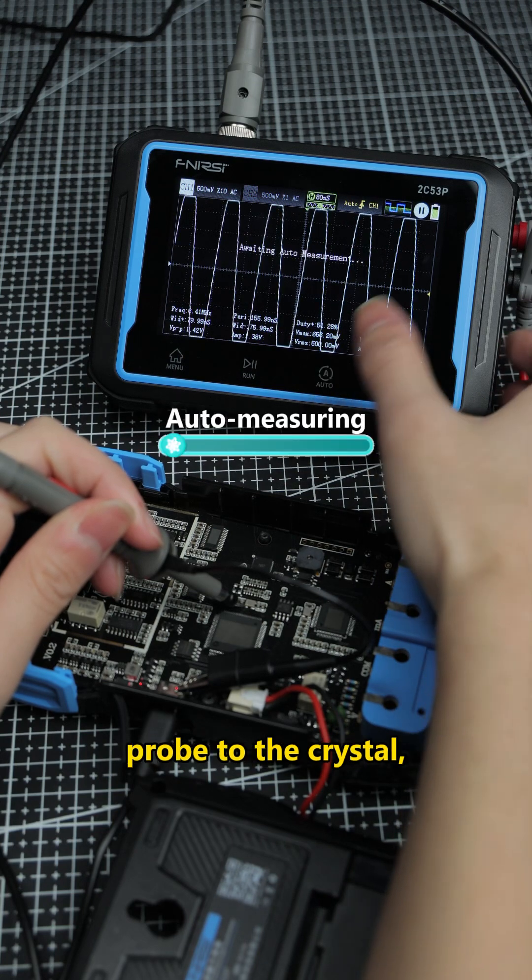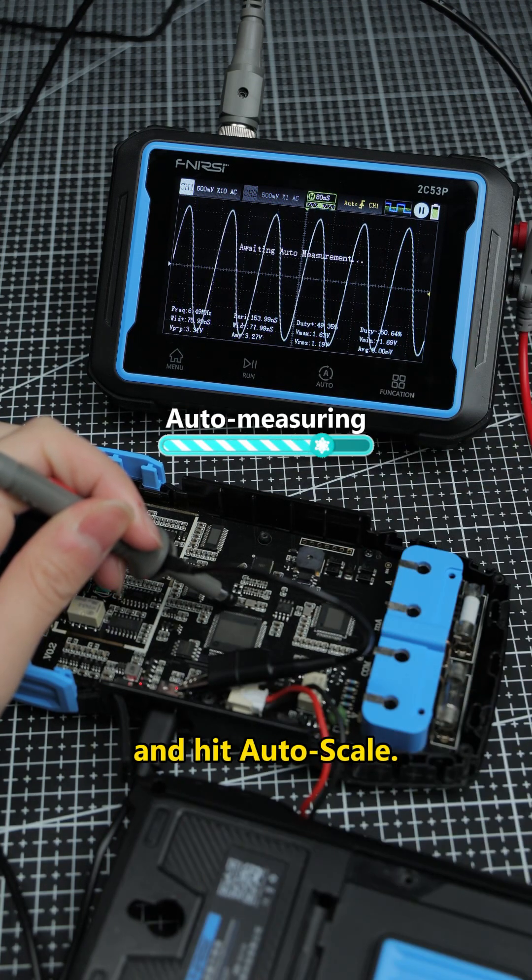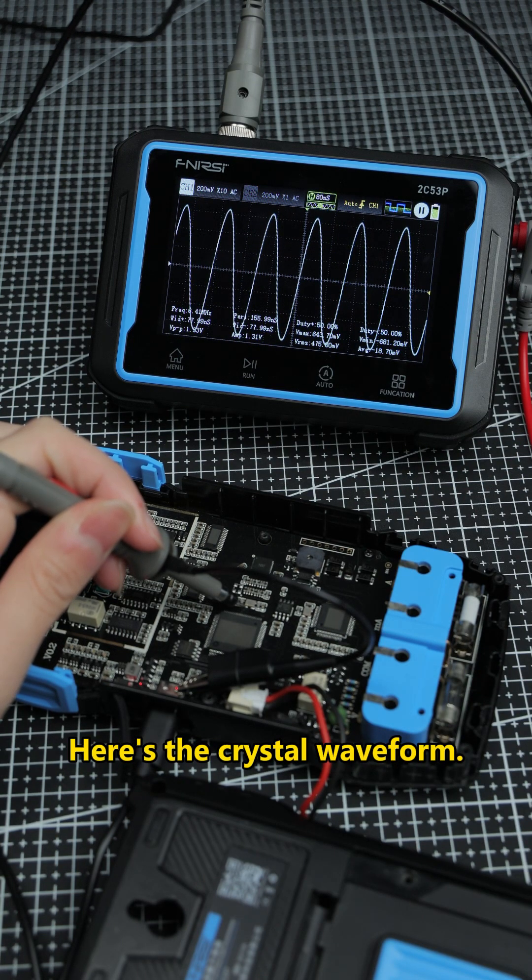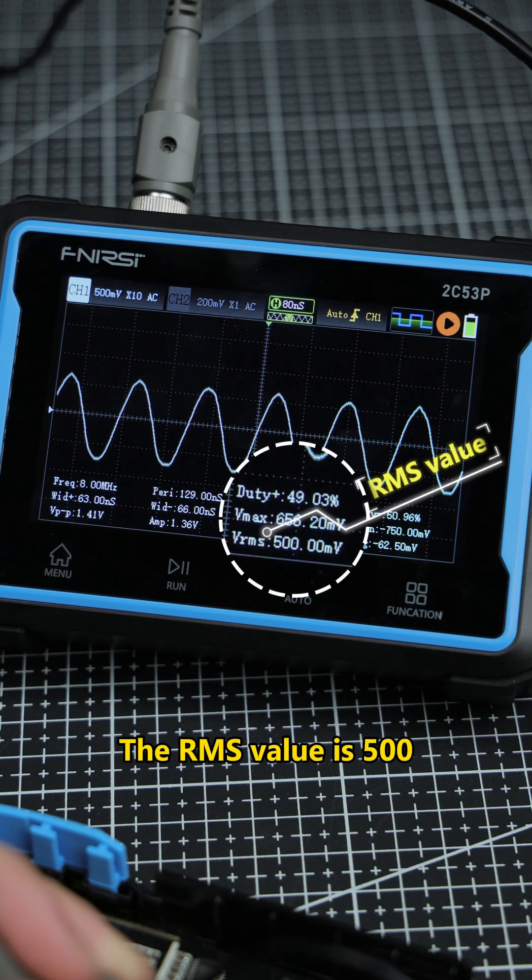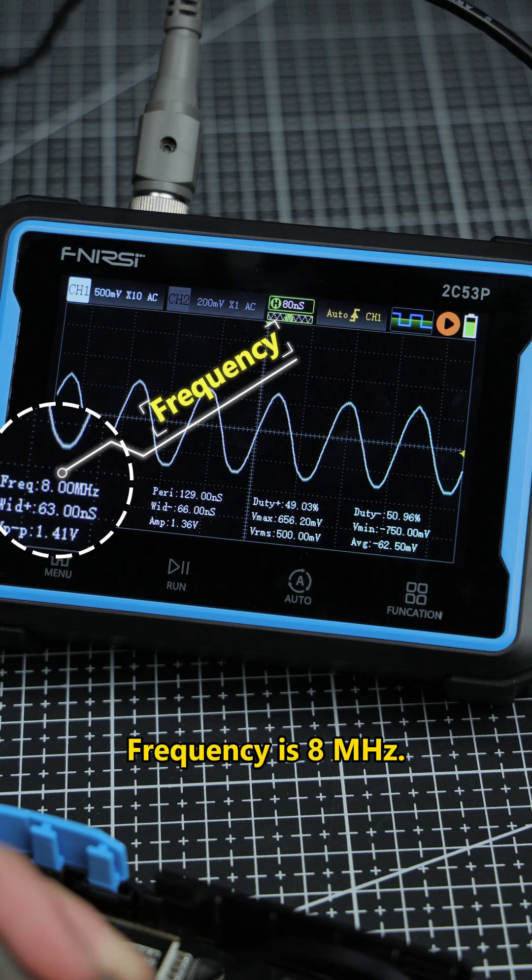Then connect the probe to the crystal and hit Auto Scale. Here's the crystal waveform. The peak-to-peak value is 1.41. The RMS value is 500. Frequency is 8 MHz.